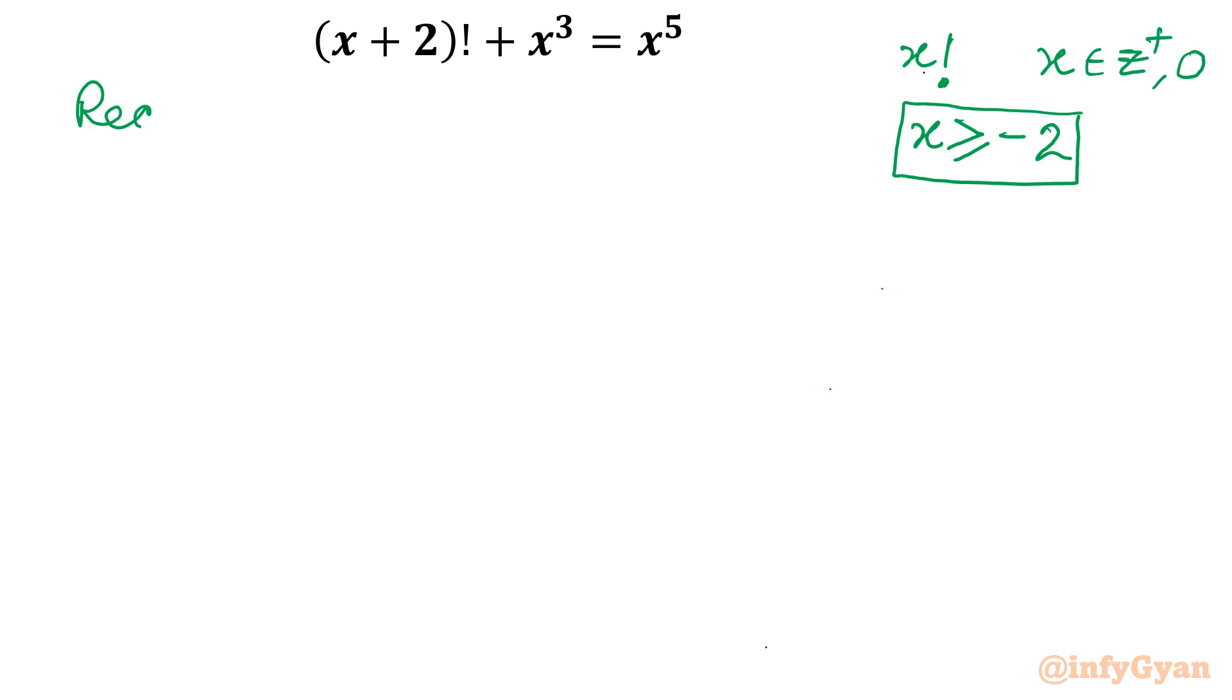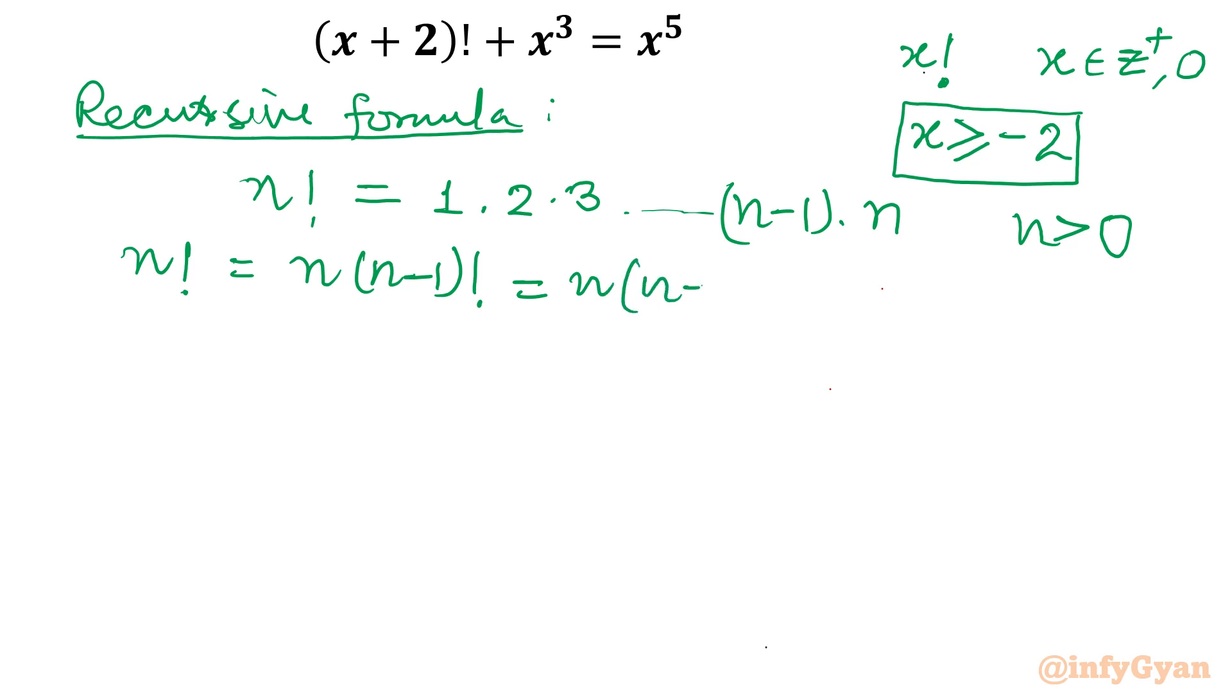Now recursive formula. Let me begin with n factorial first. Its meaning is I have to take the product of all the numbers from 1, 2, 3 up to that particular number n. So this is factorial basically, n belongs to positive integer, so n is greater than 0. Now come to n factorial in recursive order or recursive formula: n times n minus 1 factorial, or n times n minus 1 times n minus 2 factorial, and so on.